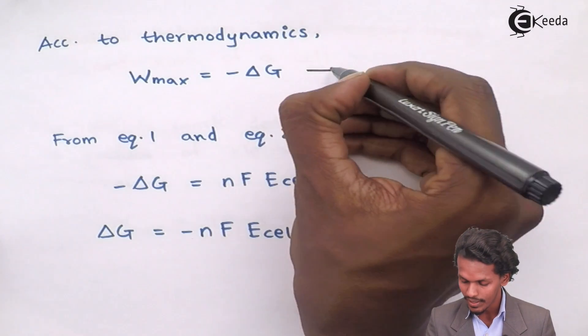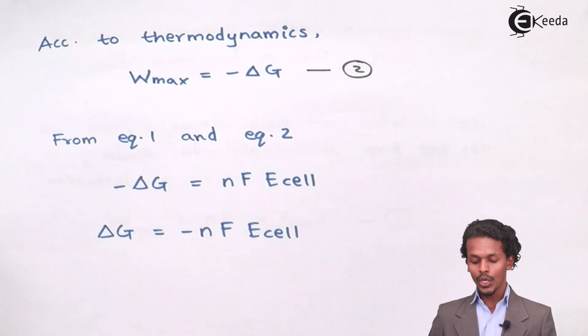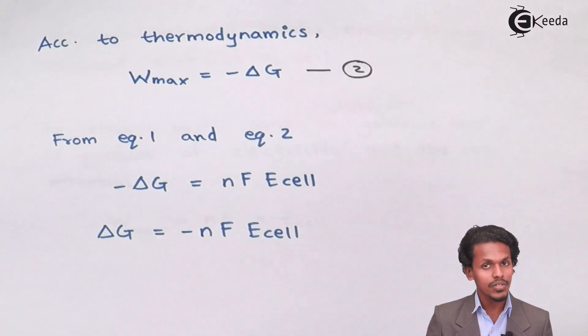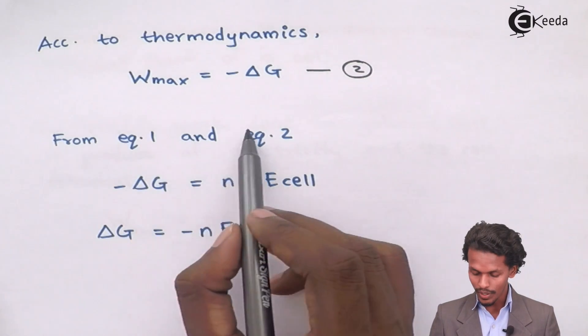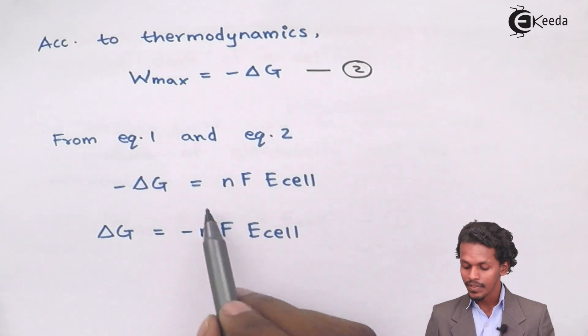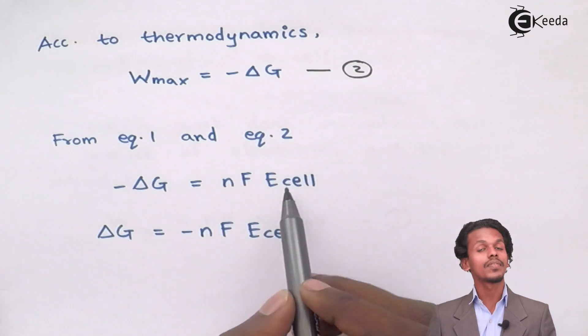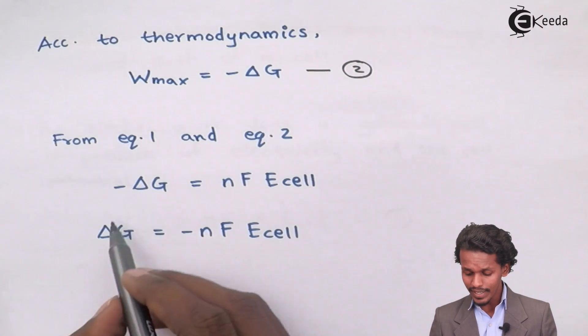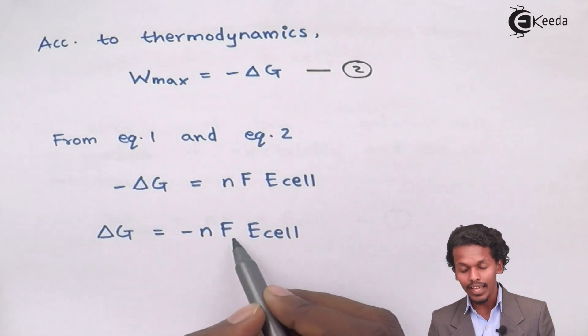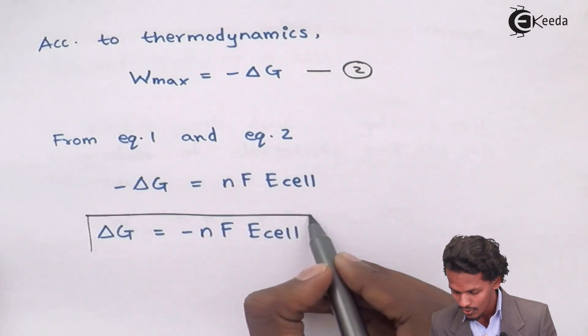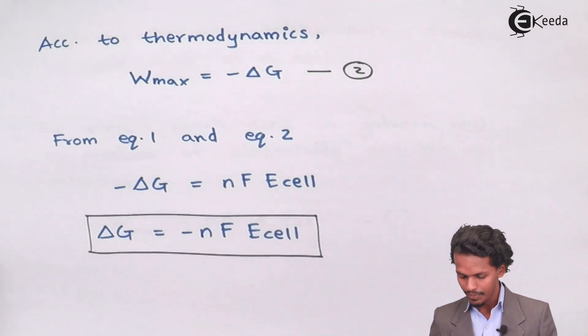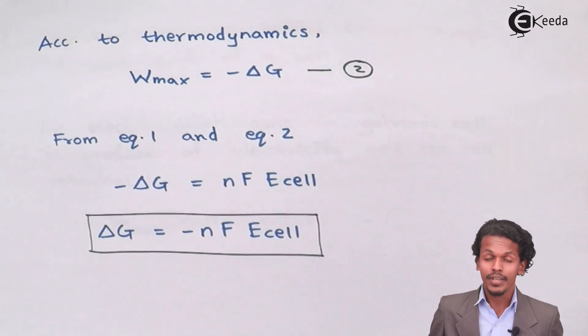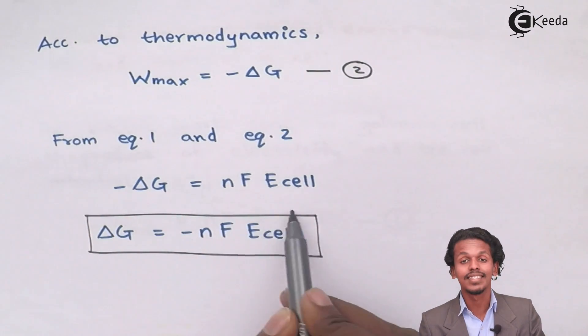So if I equate both equation number 1 and equation number 2, what I could get is minus delta G equals nF E cell, or cell potential of a particular galvanic cell. So I could write it as delta G equals minus nF E cell. So this is how we have mentioned the relation between the Gibbs free energy change and the cell potential.